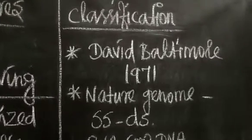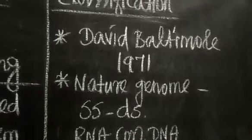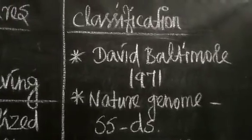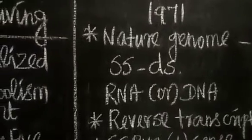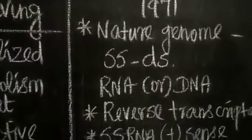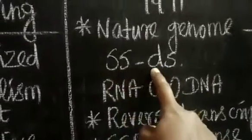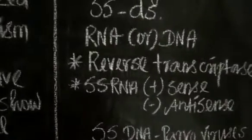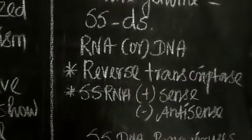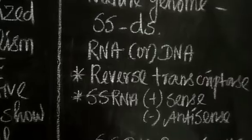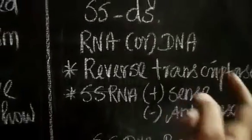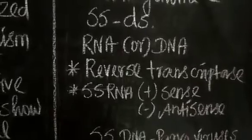The virus classification is given by David Baltimore in 1971 and the mechanism is by RNA - single-stranded and double-stranded RNA or DNA. SS is single-stranded and DS is double-stranded. RNA or DNA by reverse transcriptase enzymes. In the last class, we saw virus structure which is single-stranded RNA.